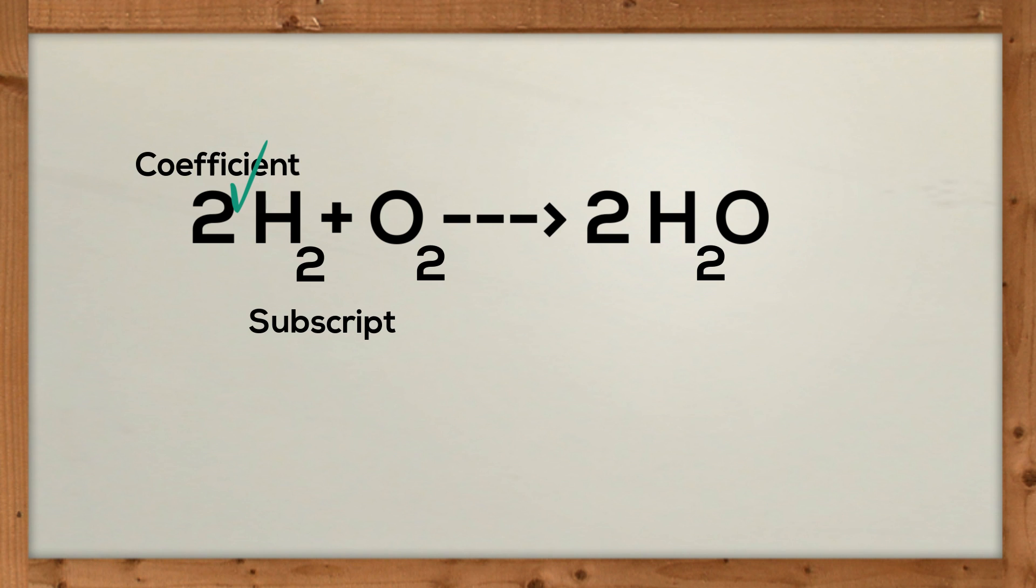In this example, 2H2 plus O2 yield 2H2O. Two moles of hydrogen react with one mole of oxygen and produce two moles of water.